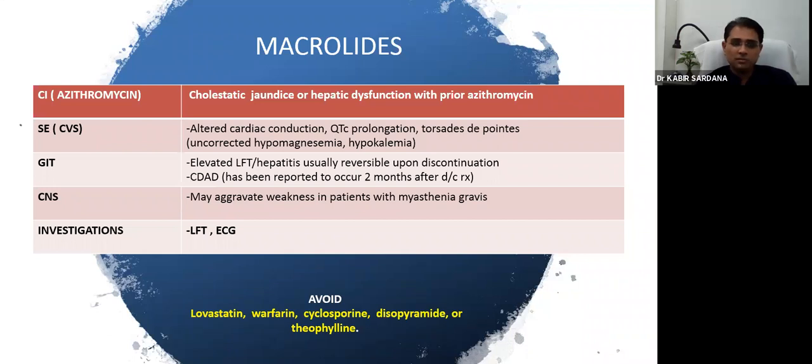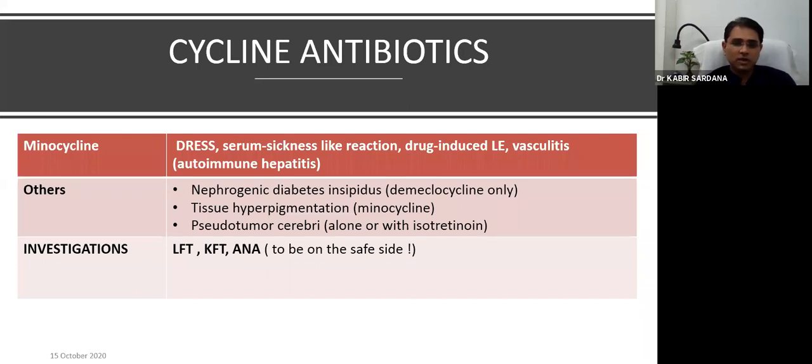Let's come to tetracyclines. Minocycline specifically can cause DRESS-like reaction, drug-induced LE, vasculitis, and rarely autoimmune hepatitis. Other side effects include pigmentation of tissue but I have not seen much in our skin type, and uncommonly increased intracranial pressure. For investigations, LFT and KFT is a safe bet. I would suggest ANA because there are cases documented in literature of drug-induced LE due to minocycline with ANA positivity and anti-dsDNA positivity. It's good to do it before starting therapy for medical-legal reasons.